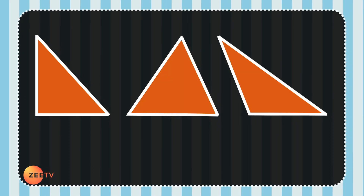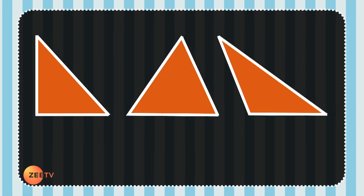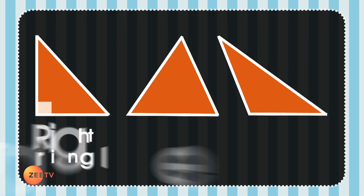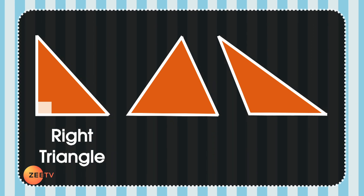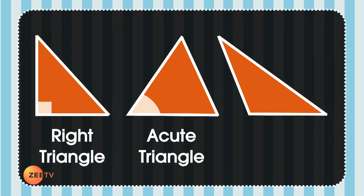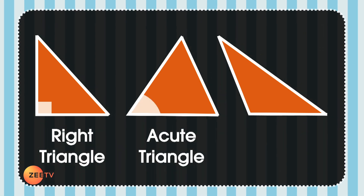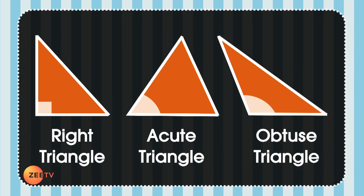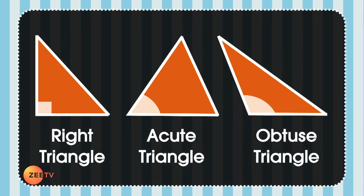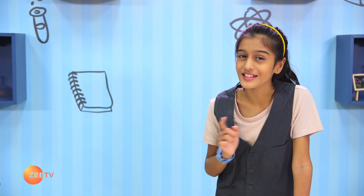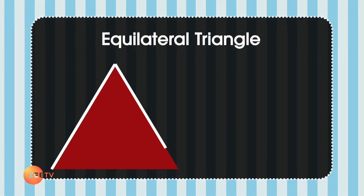Triangles! The one made from the right angle is called the right triangle. The one made from the acute angle is called the acute triangle. And the one made from the obtuse angle is called the obtuse triangle. Now pay close attention to the length on each side of the triangle.